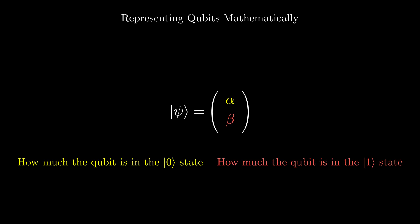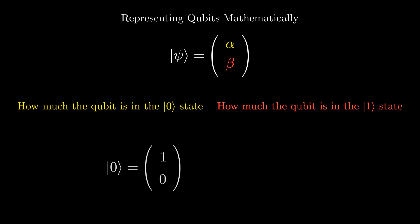So if we have a qubit in the |0⟩ state, it now makes sense why this is zero, since it is all in the zero state and none in the one. We can say the same for a qubit in the |1⟩ state being one.